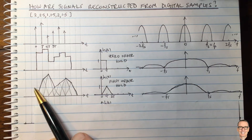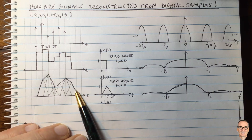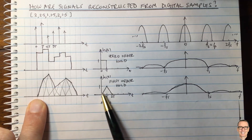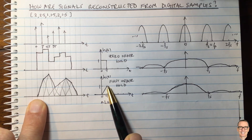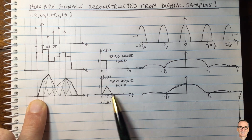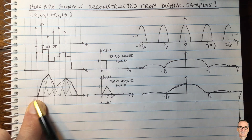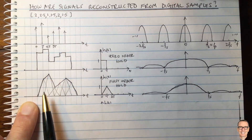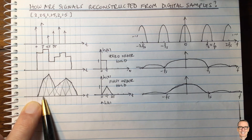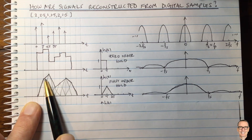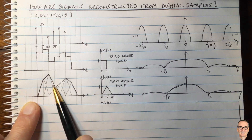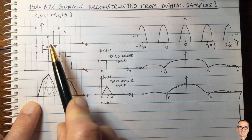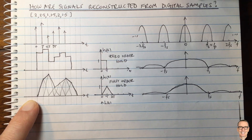This is getting closer to a good response. One thing to note is there's a delay: the triangle impulse response covers a time period of 2t, versus t for the zero-order hold. The result of each sample is mostly heard one time slot later. But in general, the first-order hold is a better filter, producing something closer to the original sampled waveform.